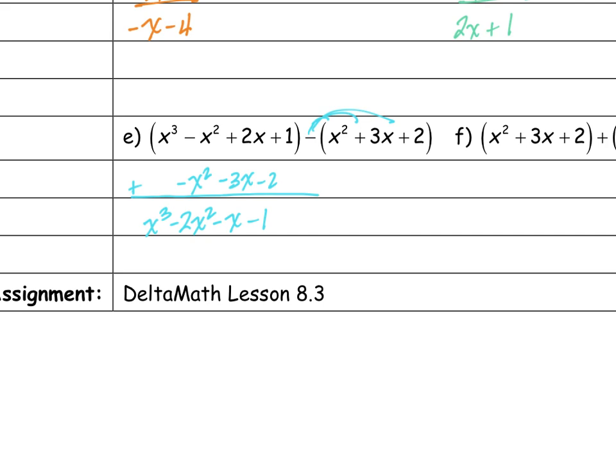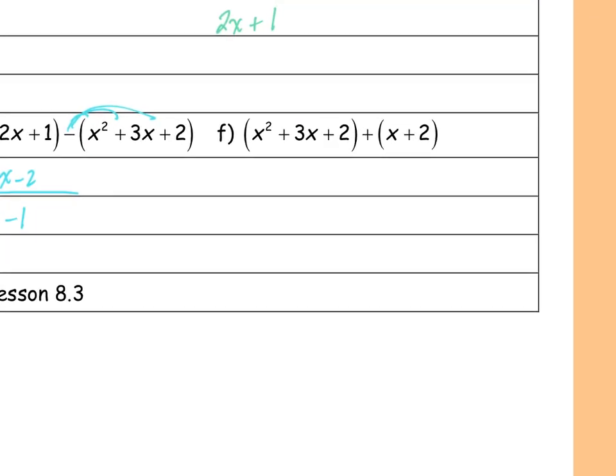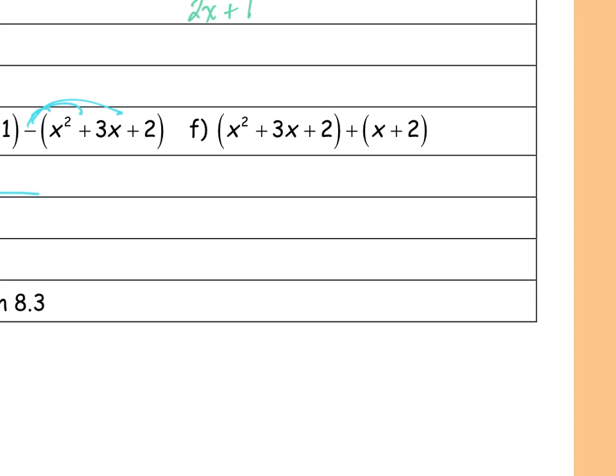The last one is an addition problem. I've got x plus 2 added together, giving me x squared plus 4x plus 4. I did most of these vertically because it's easier — you line up like terms in columns just like when you first learned to add multiple numbers together. That's why I prefer it: everything is already right there lined up.